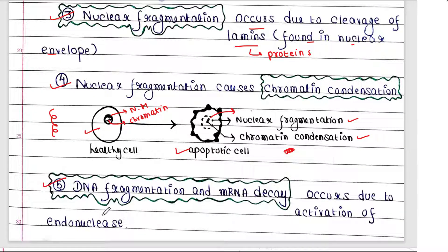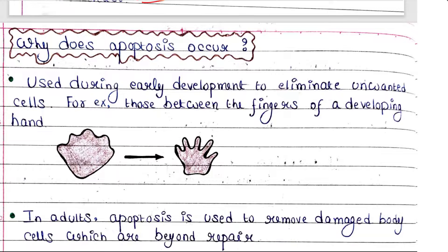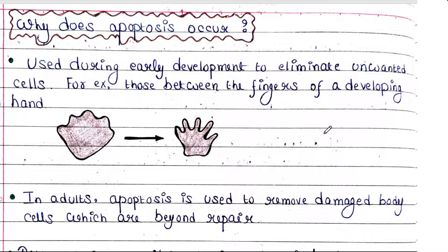Next is DNA fragmentation and mRNA decay. These occur due to the activation of endonucleases during apoptosis. These endonucleases cause DNA breakage — that is, DNA fragmentation — and they also cause mRNA decay.